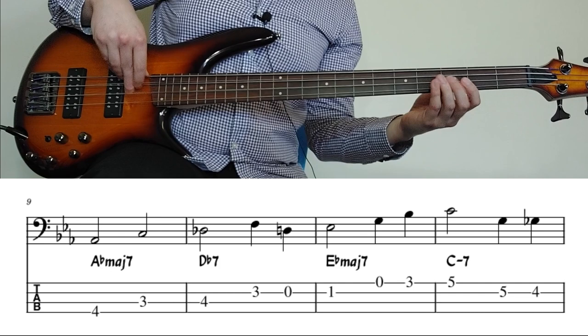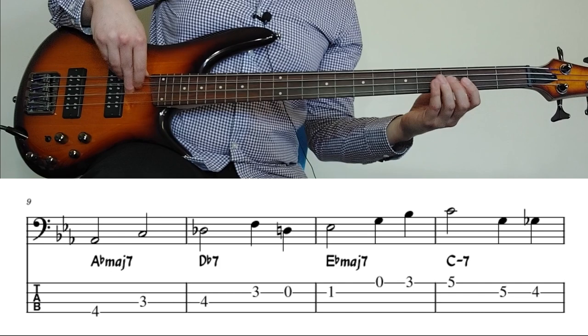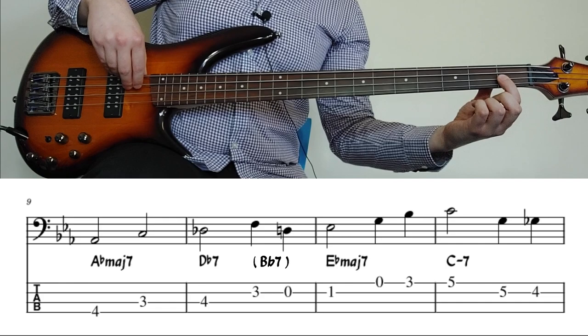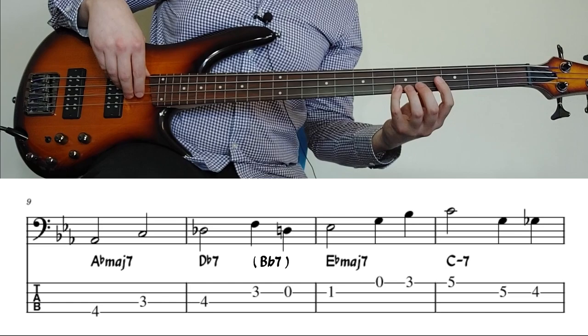Root and third. That F and D, I'm sort of thinking of that as a substitution there. So I'm kind of thinking of it as Bb7, leading into Eb, so F would be the fifth of Bb7, D natural would be the third, and it just sounds nice.